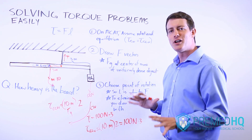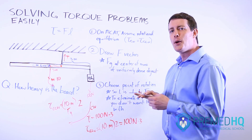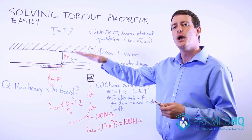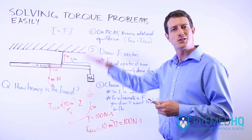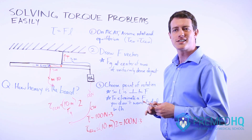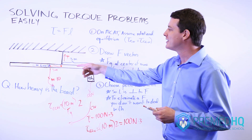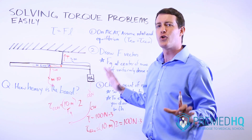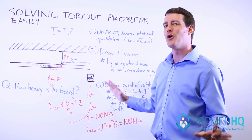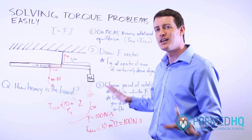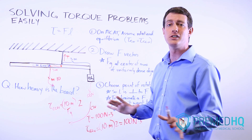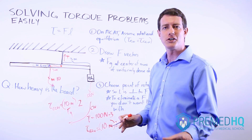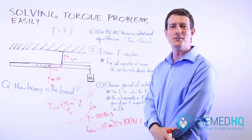Find your point of rotation, make sure it creates lever arms perpendicular to all your forces, and make sure it's somewhere that allows you to ignore a force you don't want to deal with. As long as you can do that, any MCAT torque problem will be very straightforward to handle.